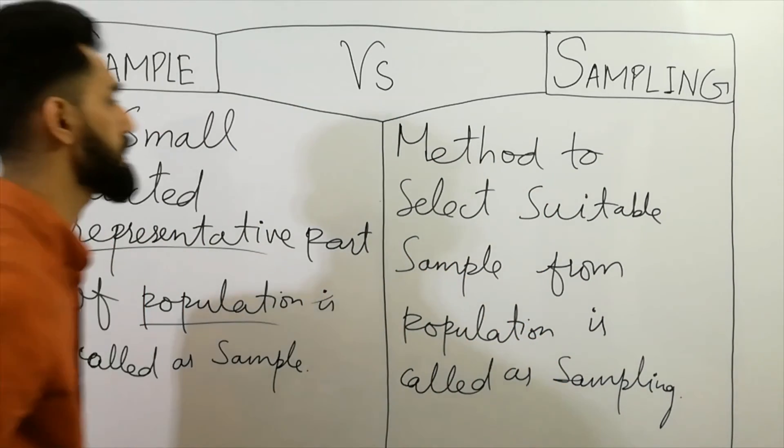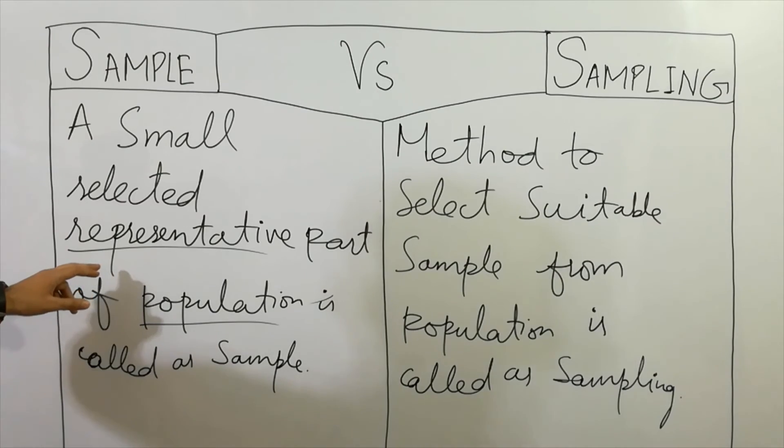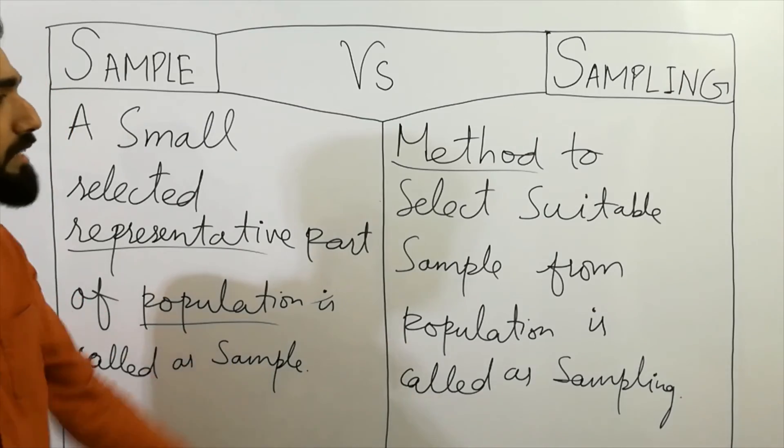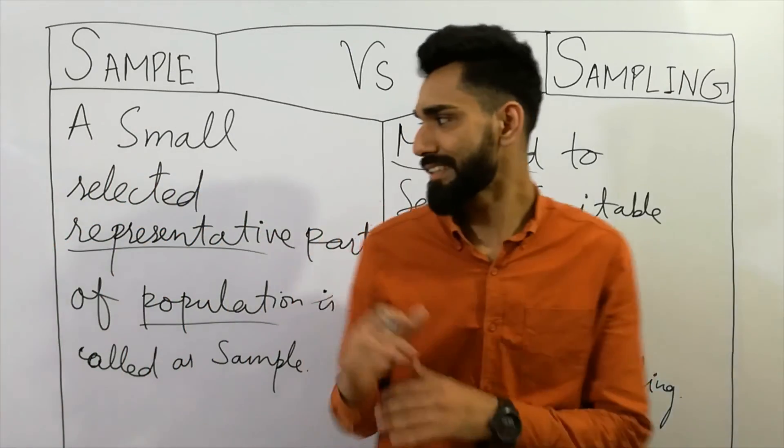So here's the difference: A small selected representative part of population is called as sample. The method to select suitable sample from population is called as sampling. I hope that you have clear the concept.